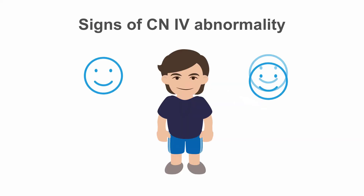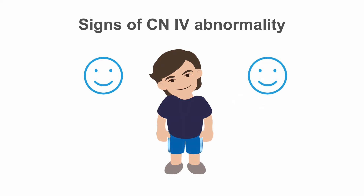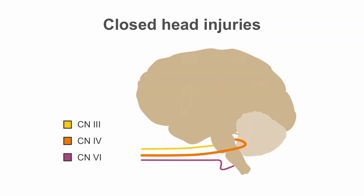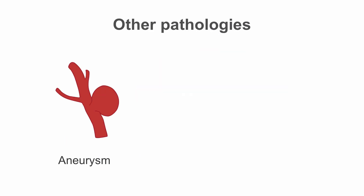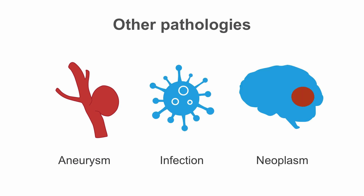This deviation creates vertical diplopia and may cause the patient to hold their head slightly tilted away from the affected side, which corrects the eye misalignment. The fourth nerve has the longest course of all the cranial nerves; this and the fact that it courses from the dorsal to the ventral surface make it vulnerable to trauma, and it is often injured in closed head injuries. Other pathologies affecting cranial nerve 4 include aneurysm, infection, and neoplasm.